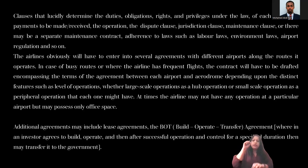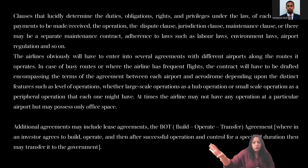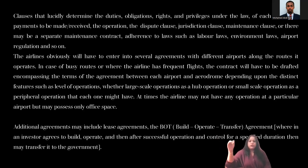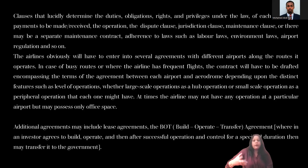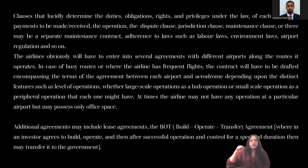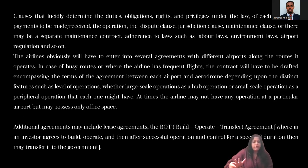There could be a maintenance clause in the airport use agreement, or there could be a separate maintenance contract altogether. Stipulations include adherence to labor laws, environmental laws, airport regulations, and who will appoint certain personnel — whether the airlines or the airports. These are the kinds of clauses enumerated in an airport use contract. Airlines must enter into airport use agreements, along with several other agreements, with different airports along the routes they operate.